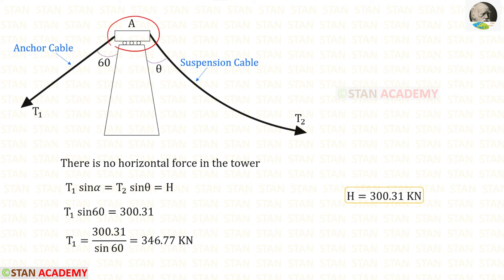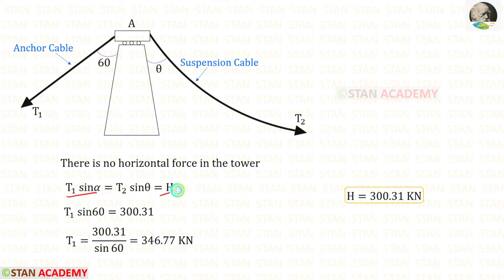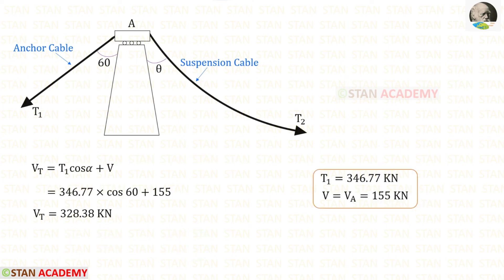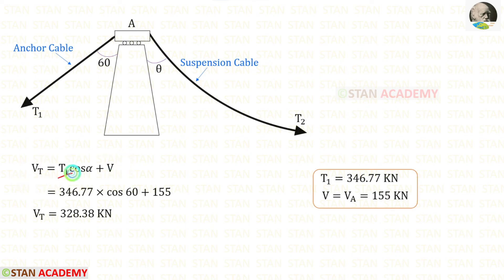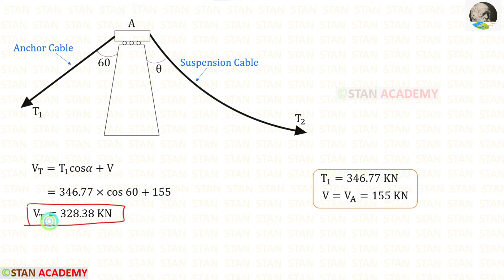Since it is a roller support, there will be no horizontal force in the tower. Using the expression with alpha = 60 degrees and the horizontal thrust H, we can find T1. Then using the formula for the vertical force in the tower, with T1 and alpha = 60 degrees, and the vertical reaction at A being 155 kN, we finally get the vertical force VT = 328.38 kN.